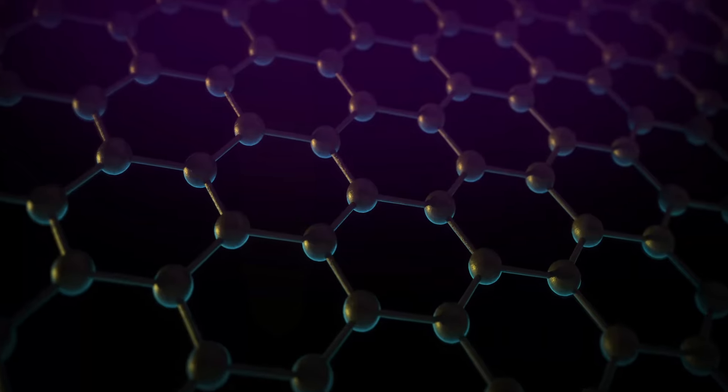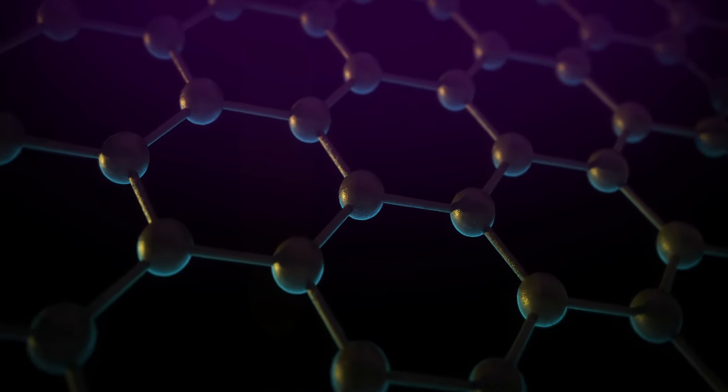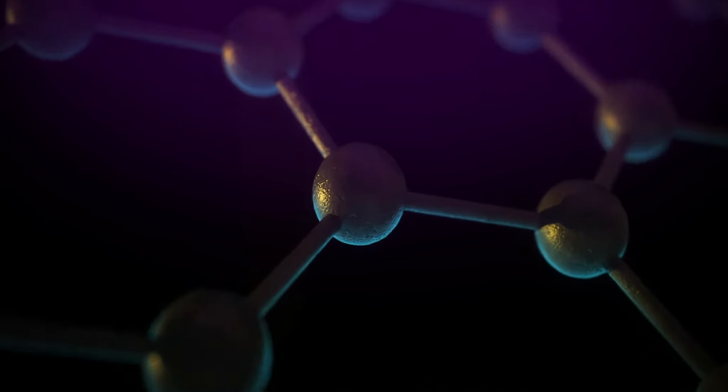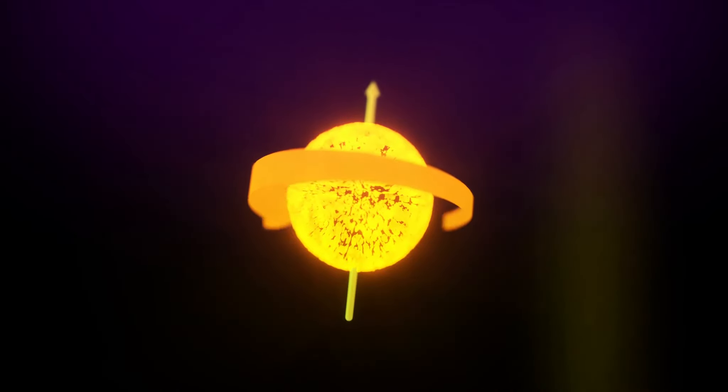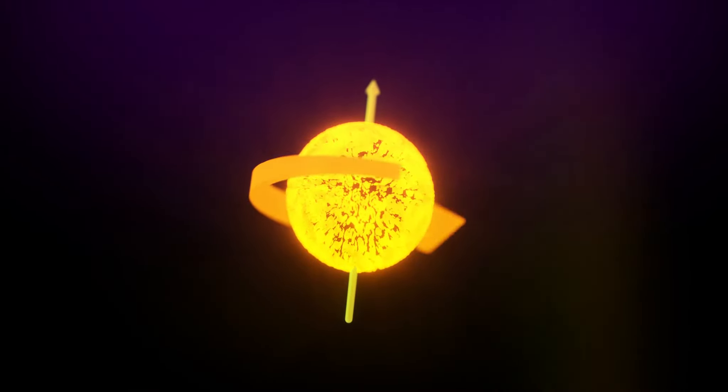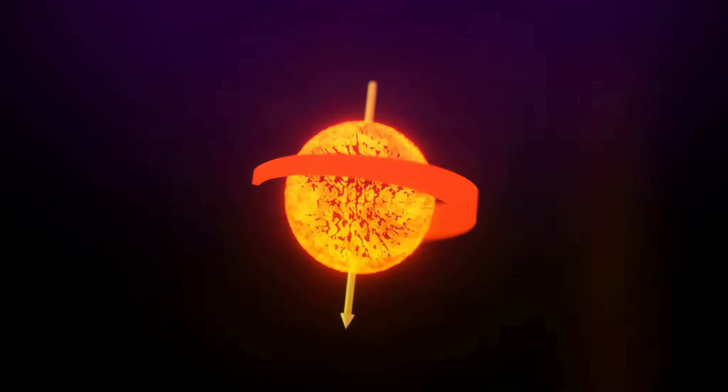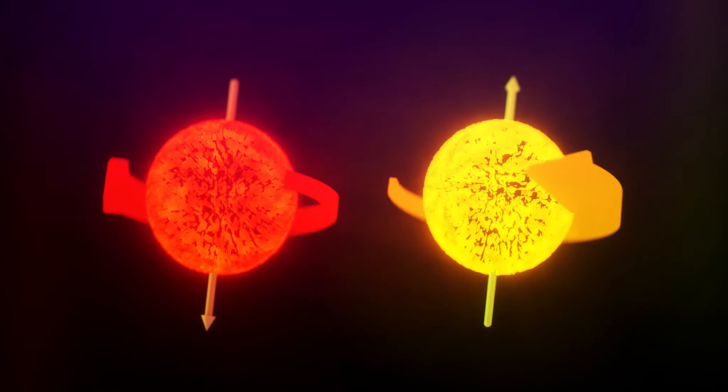Graphene is an excellent conductor of electrons and a very good conductor of electron spin. Spin is a quantum mechanical property of electrons, which makes them behave like very small compass needles. The spin of an electron has a direction and can point up or down or in between.